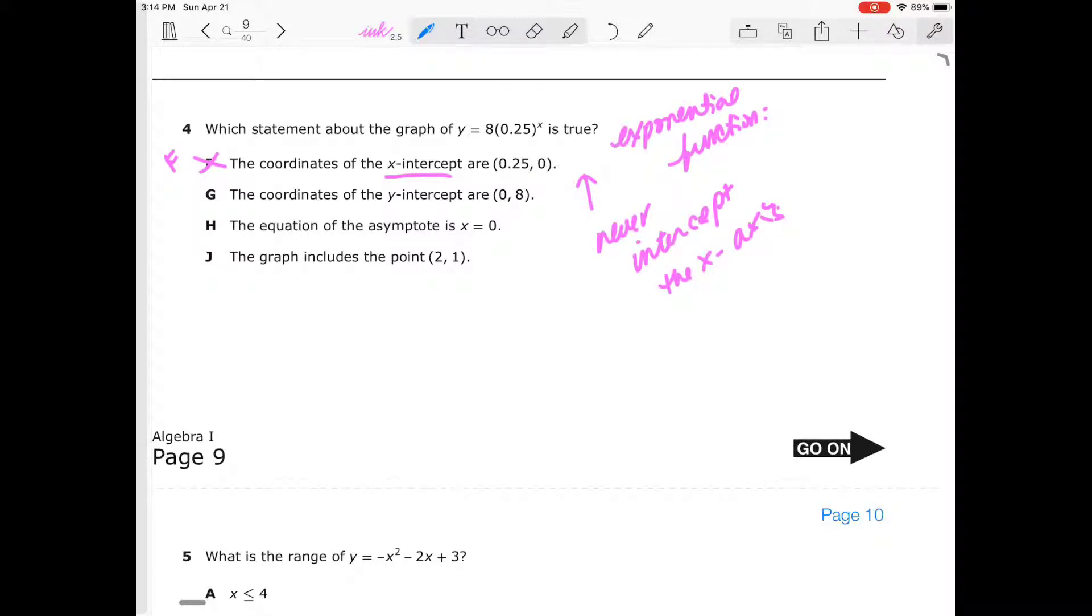Number G: the coordinates of the y-intercept are (0, 8). Well that looks true, that is true. If I plug in y = 8 times 0.25 to the power of 0, that's going to give me y = 8 times 1 which equals 8. So that gives me the coordinate (0, 8). Number H: the equation of the asymptote is x = 0. That's false. It should be y = 0 is the asymptote, not x = 0.